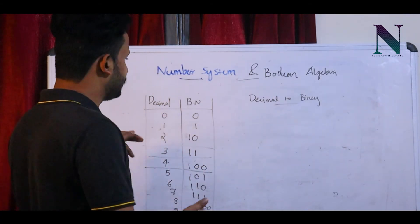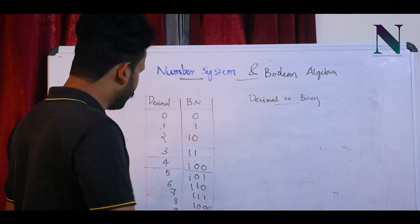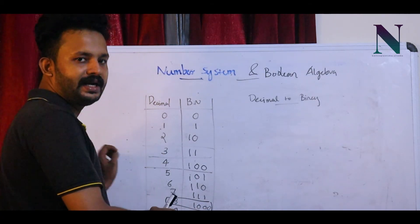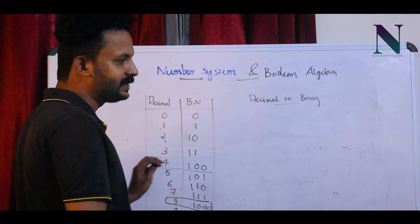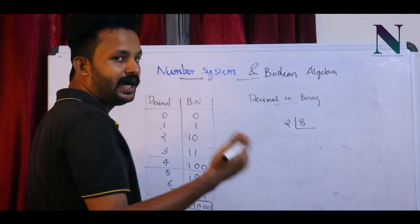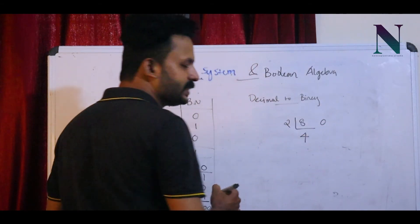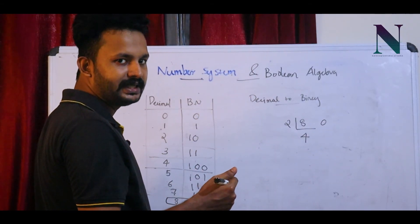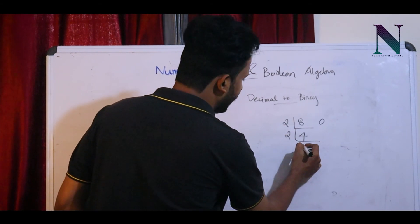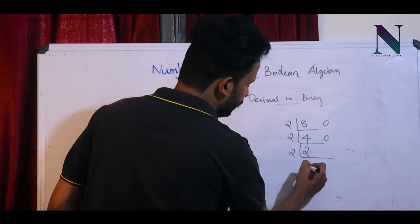Decimal to binary — how do we convert? We can convert a decimal number into binary. Simple example: convert 8 to binary — the answer is 1000. We divide by 2: 8 divided by 2 is 4, remainder 0. Then 4 divided by 2 is 2, remainder 0. Then 2 divided by 2 is 1, remainder 0. Reading the remainders gives us 1000.